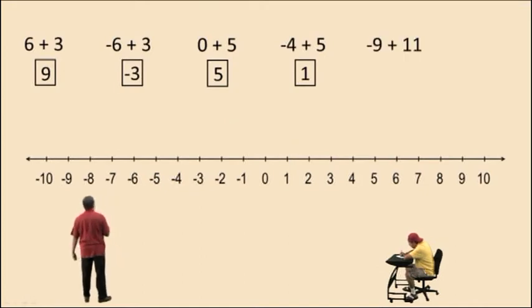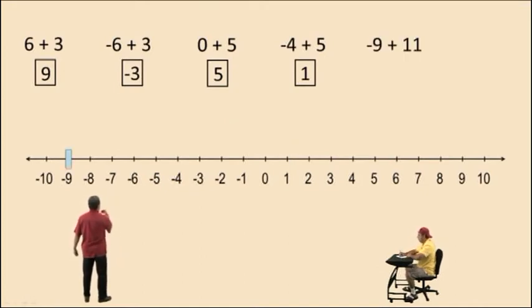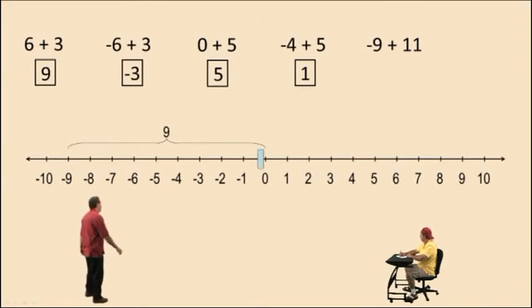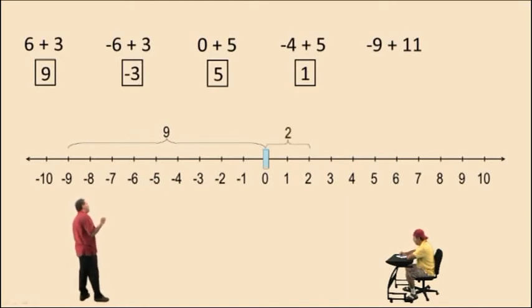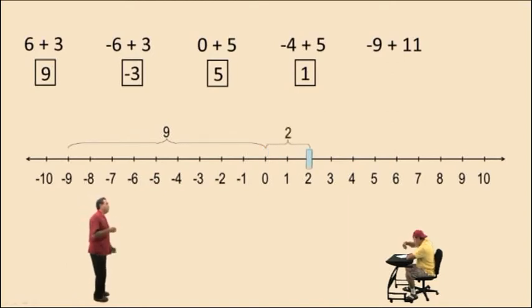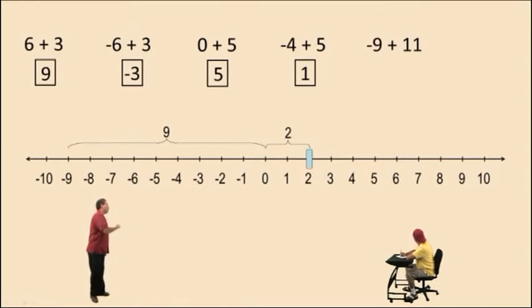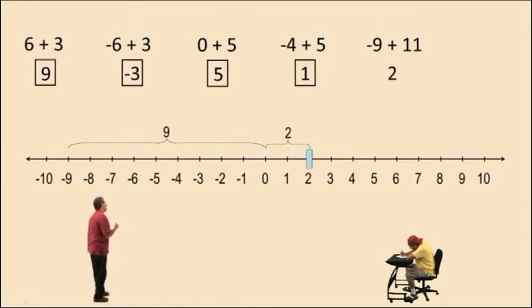How about negative 9 plus 11? We start here at negative 9. If we move 9 units to the right, that will take us to 0. And because we're moving a total of 11 to the right, we still have to move 2 more units and that takes us to 2. So now that we've moved a total of 11 units, we see that negative 9 plus 11 is positive 2.